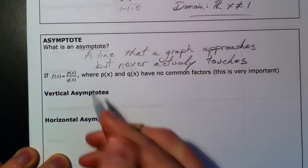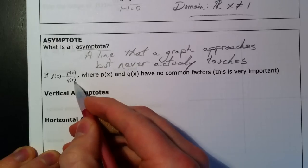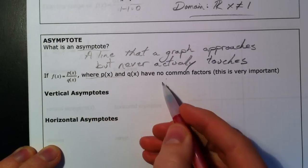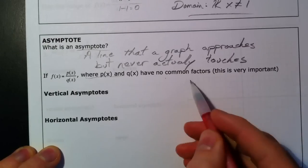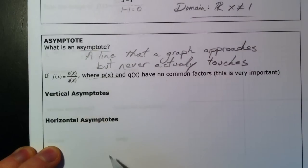So remember our Rational Function, p(x) over q(x). And where p(x) and q(x) have no common factors, so what this means is you want to make sure that your function is fully simplified before you do this next part, otherwise this next part is not going to apply.